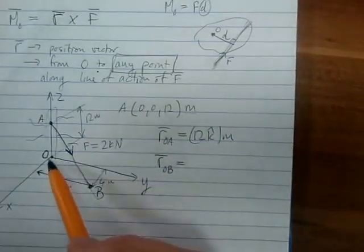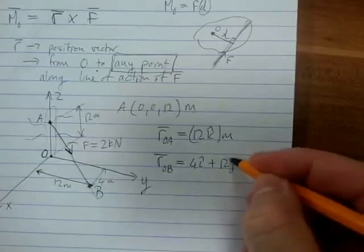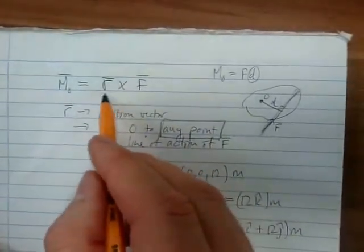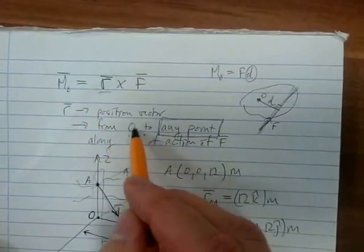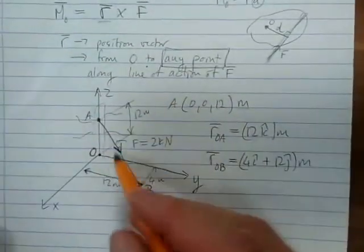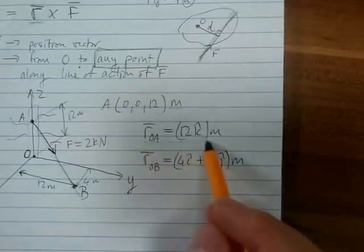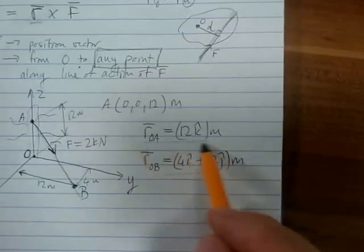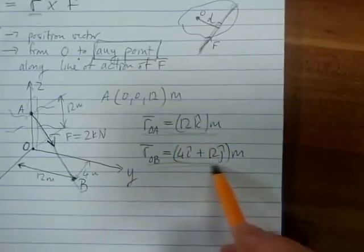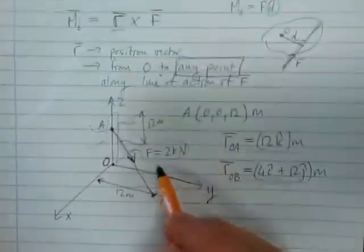Either position vector will give the correct answer. You'd prefer rOA because it has more zeros, making the calculation quicker. Next, F is given as 2 kilonewtons — but that's only the magnitude. We need to convert it into Cartesian vector form. We say F equals the magnitude of F times the unit vector from A to B.